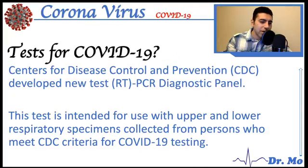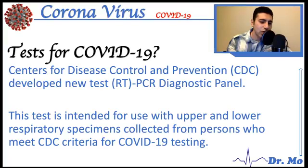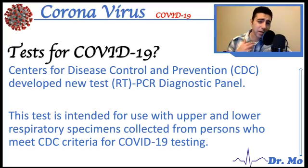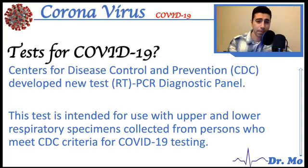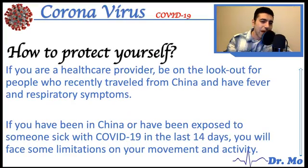If someone is infected, how do we test for it? The CDC — the Center for Disease Control and Prevention — has developed a new real-time PCR diagnostic panel, a test intended to be used with upper and lower respiratory specimens. If we suspect someone may have the virus, we collect specimens from their upper and lower respiratory tract and process them through this test.